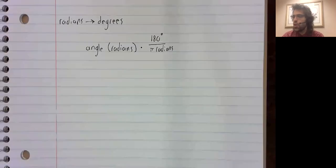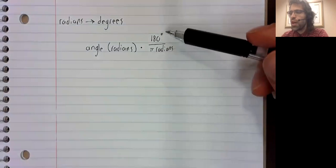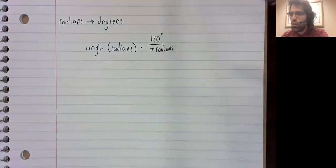To go the other way, from radians to degrees, we multiply by the reciprocal, 180 over pi.